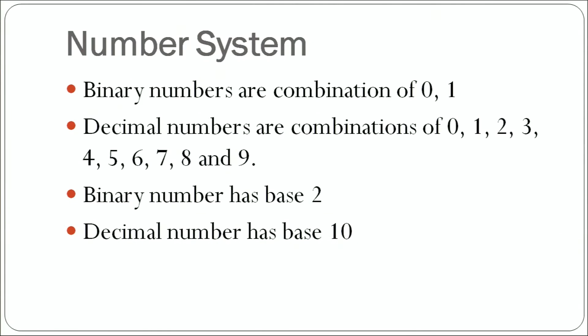Binary numbers have base 2 because we are using only two digits, and decimal numbers have base 10 because we are using 10 digits to form any number. So the base is defined by the number of digits that we are using to define the character set of a particular number system.